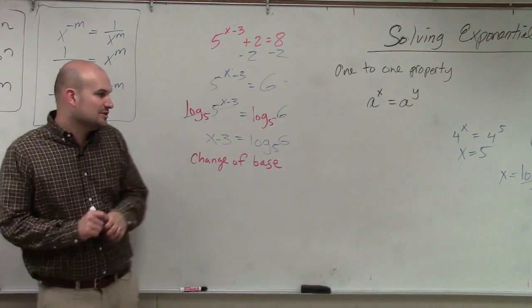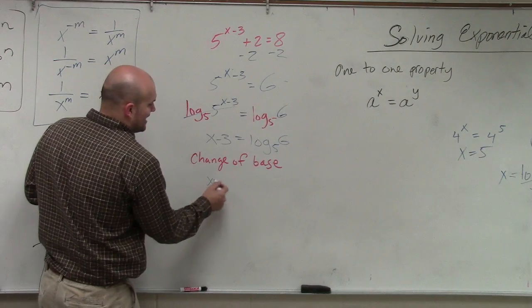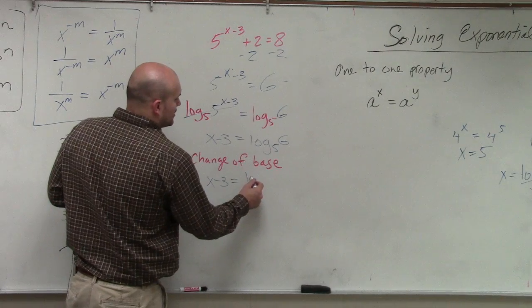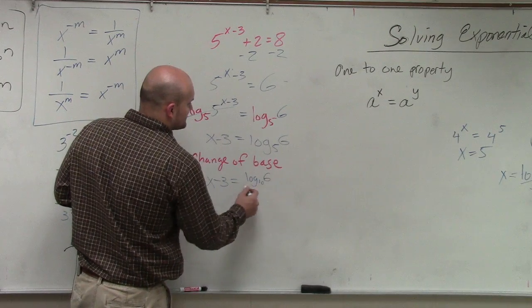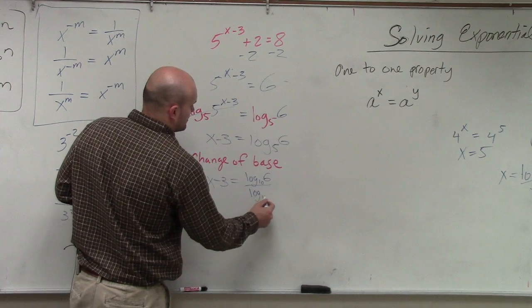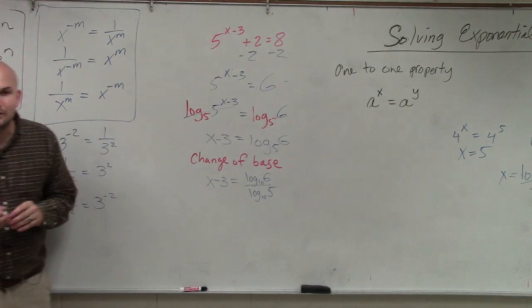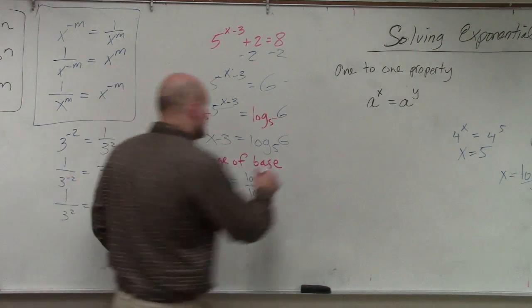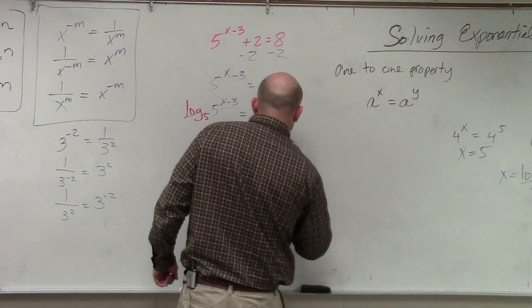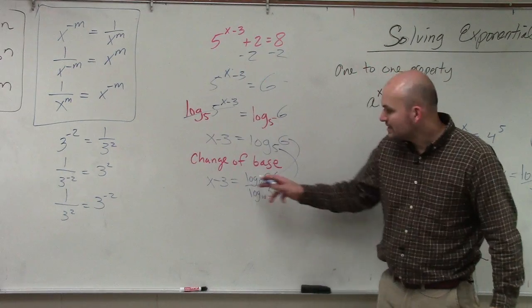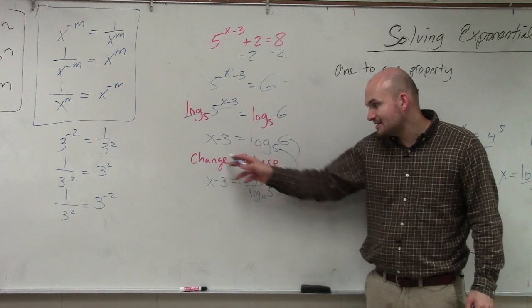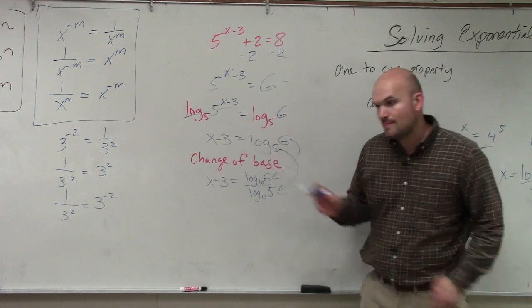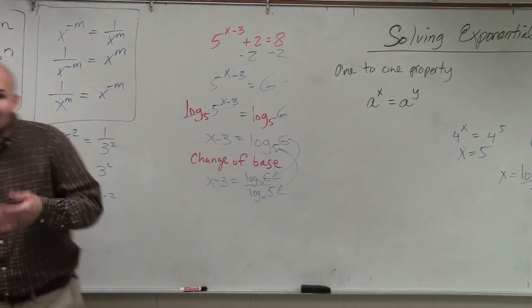So what we're going to have to do is, if I have x minus 3 equals, you can only use log base 10 of 6. You can only use log base 10 in your calculator. So what you're going to do is do log of 6 divided by log of 5. Rewriting your logarithm like this is what we call the change of base formula.